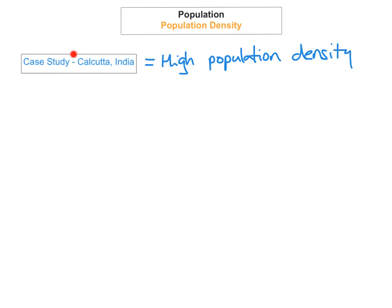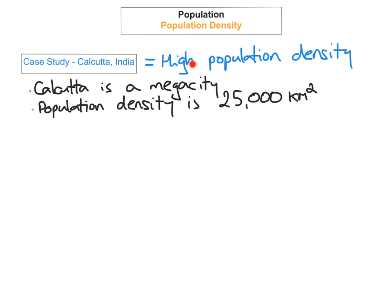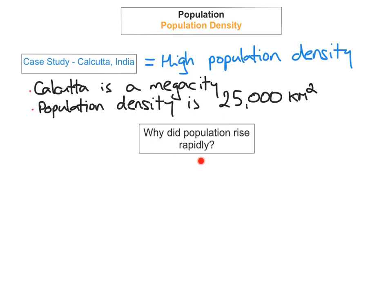Our first case study is Calcutta, India, which has a high population density. Calcutta is a mega city — a mega city is when the population exceeds 10 million people. Its population density currently stands at 25,000 people per square kilometer, an enormous number for such a small area.